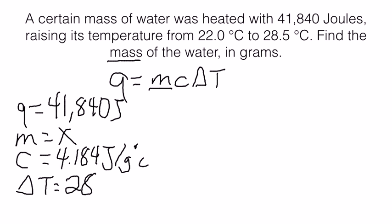And our delta T is temperature final minus temperature initial. And our final temperature in this case is 28.5 degrees Celsius, since that's the temperature the water rose to, minus 22 degrees Celsius. When you subtract those, you get a delta T of 6.5 degrees Celsius.